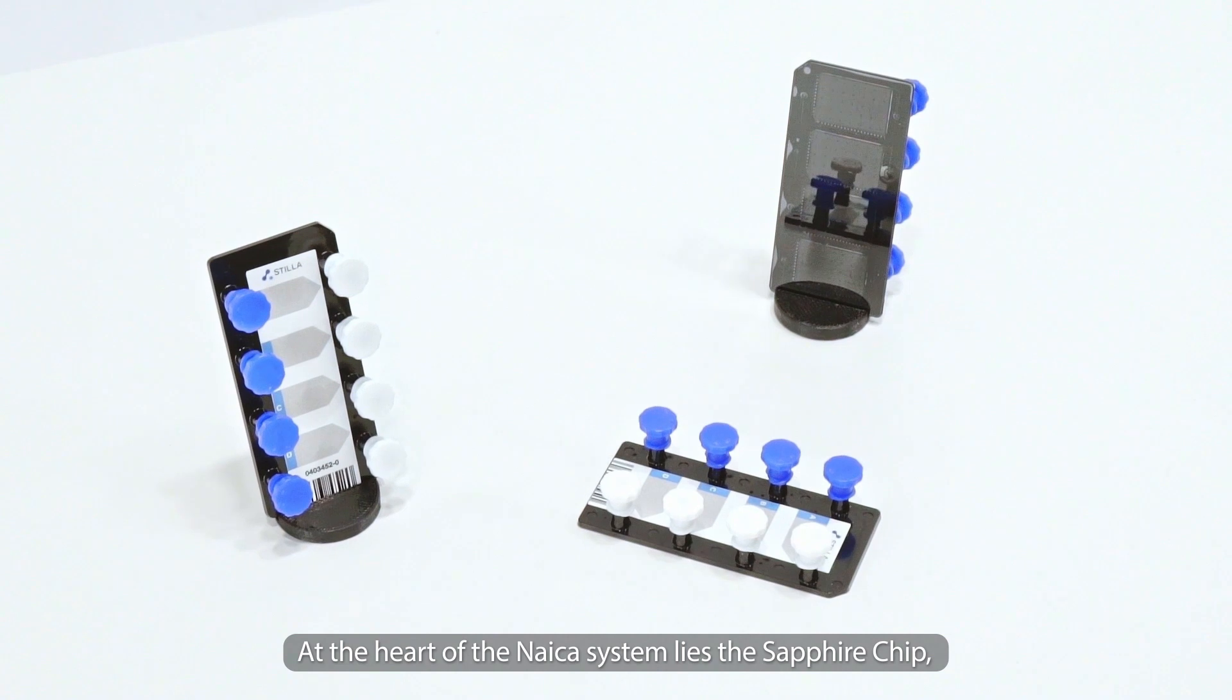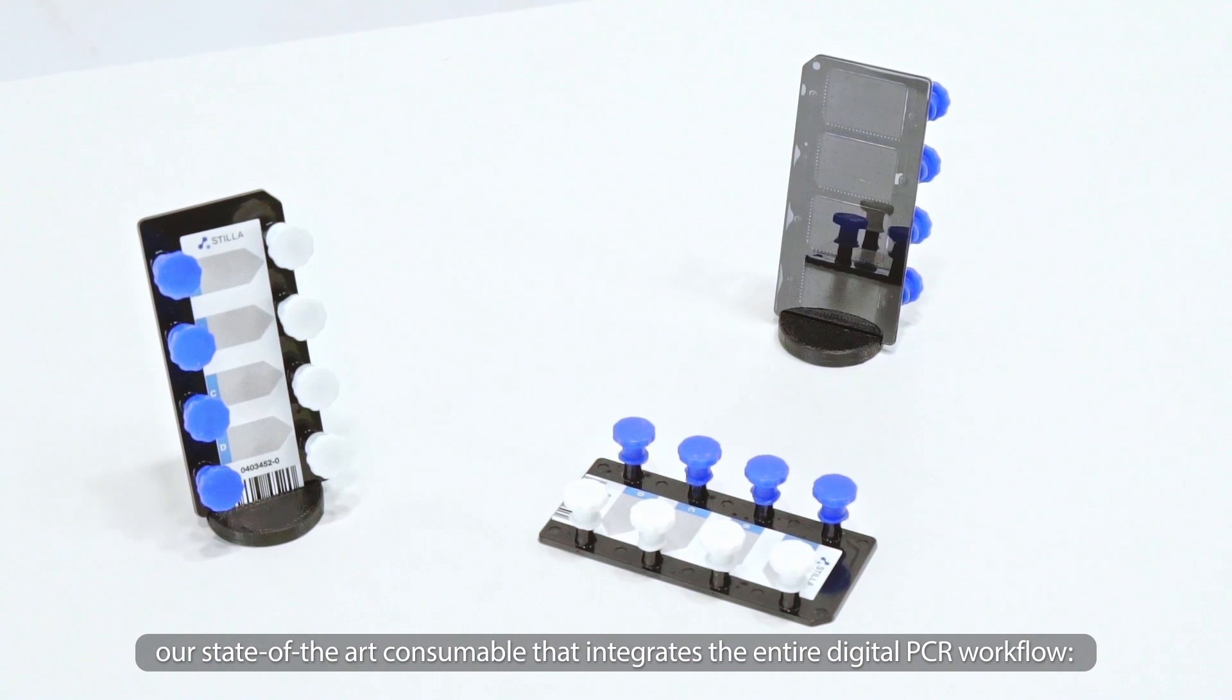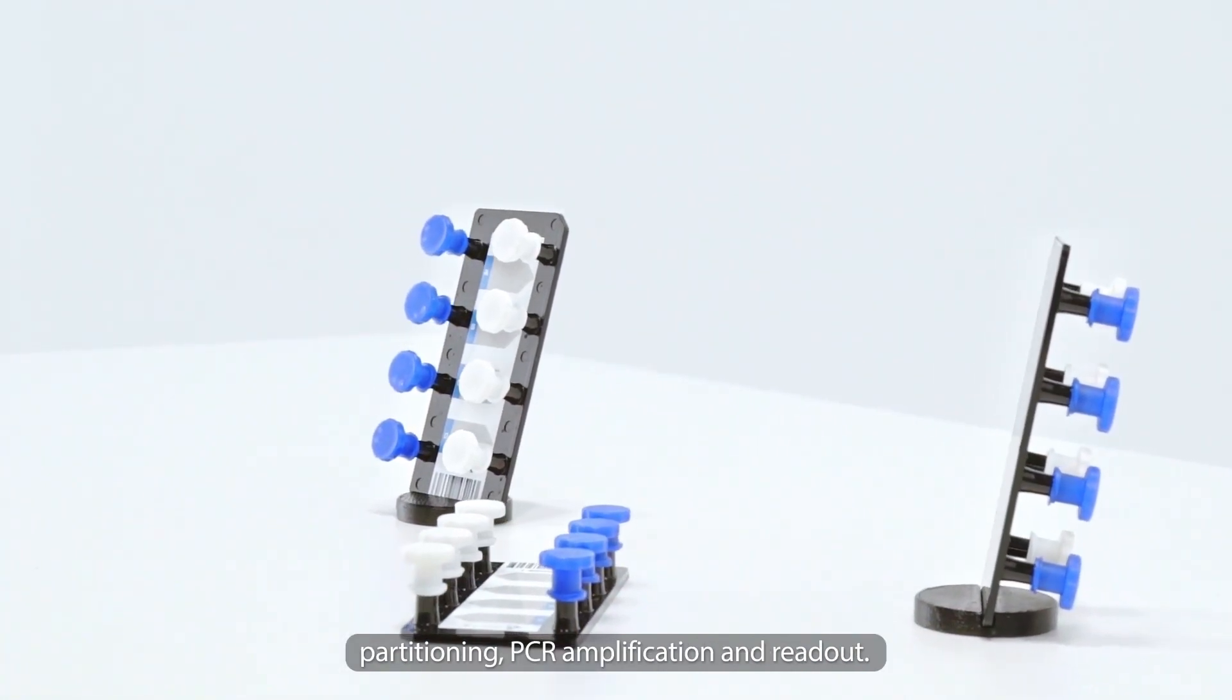At the heart of the NICA system lies the Sapphire chip, our state-of-the-art consumable that integrates the entire digital PCR workflow: partitioning, PCR amplification, and readout.